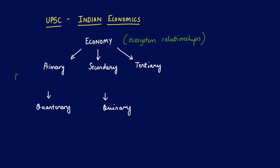An economy is primarily divided into three sections. The first is the primary economic sector. Primary sectors deal with raw materials — if you're in a country and you extract raw materials from that land, that's the primary sector. This includes things like mining or oil exploration, anything to do with extracting raw materials from the land.